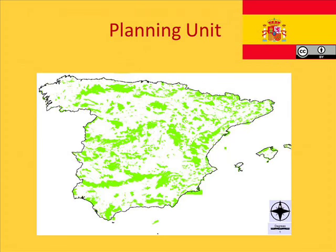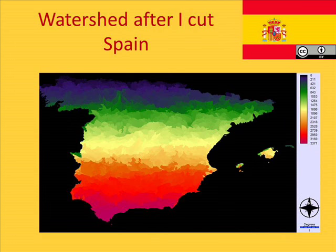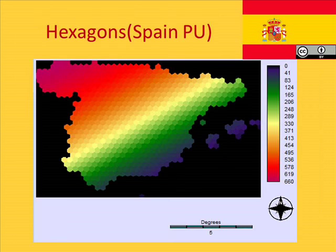Here we have the planning unit for Spain. After cutting it with the admin-zero boundary of Spain, we used the watershed to generate the ecological niche planning unit for Spain. Here we also illustrate the hexagons for Spain, which were used for the systematic planning unit. The hexagons were also created in ArcView GIS.